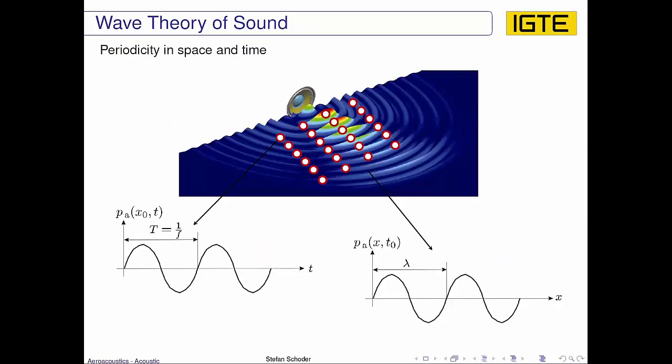This periodicity can be shown here in this graph where we assume that a loudspeaker amplifies an inviscid fluid like air. At a fixed position we monitor the acoustic pressure and we see that the acoustic pressure in this monitoring point has a certain harmonic shape.